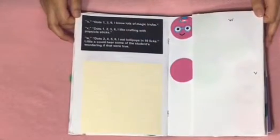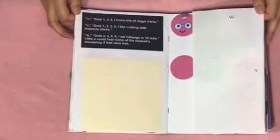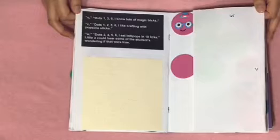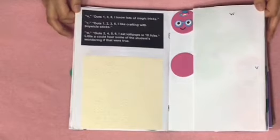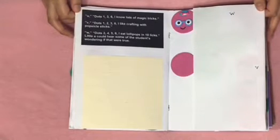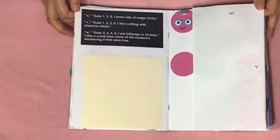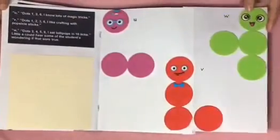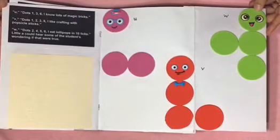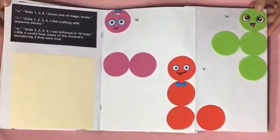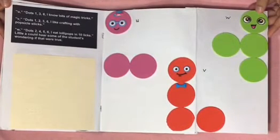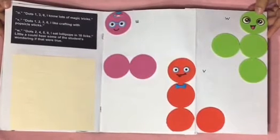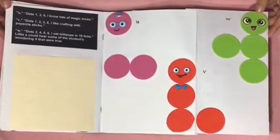U dots one, three, six. I know a lot of magic tricks. V dots one, two, three, six. I like crafting with popsicle sticks. W dots two, four, five, six. I eat lollipops in ten licks. Little A could hear some of the students wondering if that were true. Here is a magenta Little U with a light blue hat, a pink bow, and blue glasses, and a red Little V with a blue bow tie, and a light green Little W.